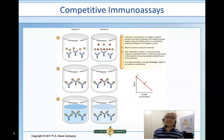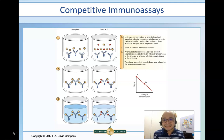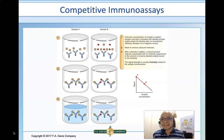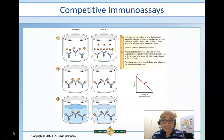Let's look at the illustration. There are two sets of samples: Sample A and Sample B. Sample A comes from a patient with hypothyroidism, meaning that patient has a very low amount of thyroid hormone — let's say we're trying to measure T4. Sample B, on the other hand, comes from a patient with hyperthyroidism. The red symbol here represents T4, the thyroid hormone.